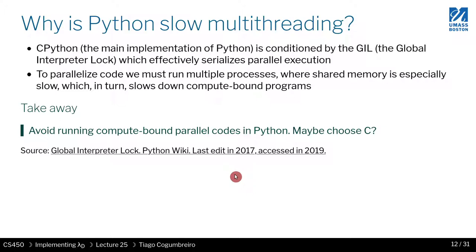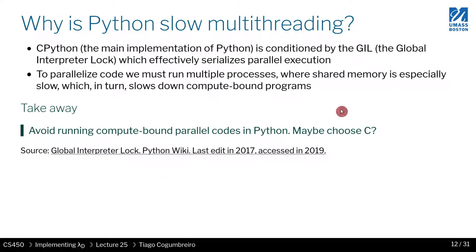This is all because of CPython. If you think about Jython, for instance, which runs on Java, it doesn't have that problem and runs much faster. So again, it's related to the implementation. The key point is: if you want to do compute-bound parallel code, maybe you shouldn't use CPython. Maybe use a C compiler. That's what a lot of people do — that's why NumPy is fast: the compute-heavy part is written in C and then exposed into Python. There's a discussion of the Global Interpreter Lock and its problems on the Python wiki if you're interested.